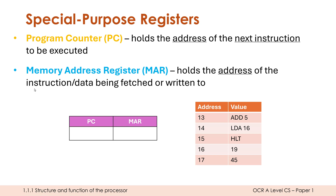Instructions and data are two separate things. Instructions can be executed and actually do stuff, but they often require data to work. Both instructions and data will have an address, which adds a bit of complication. Let's say these three instructions are part of a program, and the first value — ADD 5 — is the instruction currently being executed by our CPU. So what address will our PC be holding? It won't be 13; it's going to be 14, because the PC always holds the address of the next instruction to be executed.